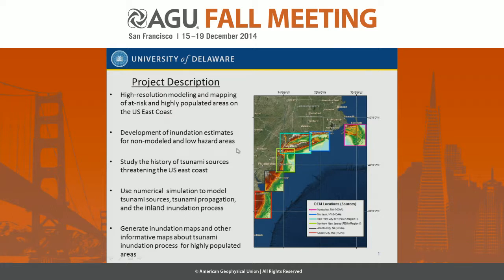The project is funded by NTHMP to generate high-resolution modeling and mapping for at-risk and highly populated areas in the Upper East Coast. In collaboration with our colleagues at the University of Rhode Island, we studied the history of sources in the Atlantic Ocean and used numerical simulation to model the source, the ocean propagation, and the inland inundation for the areas shown in the map here.